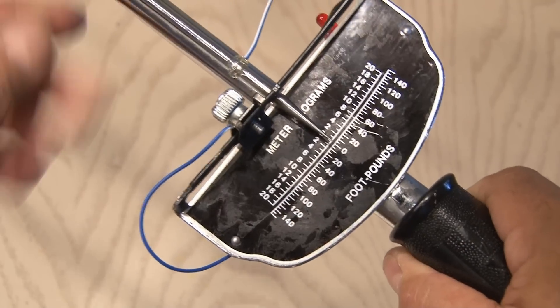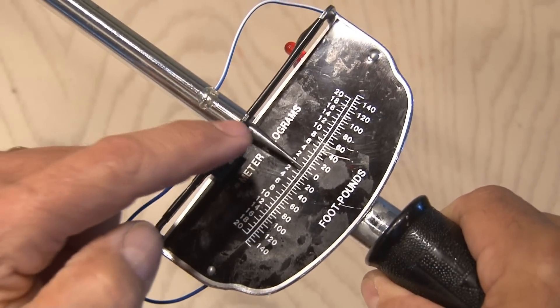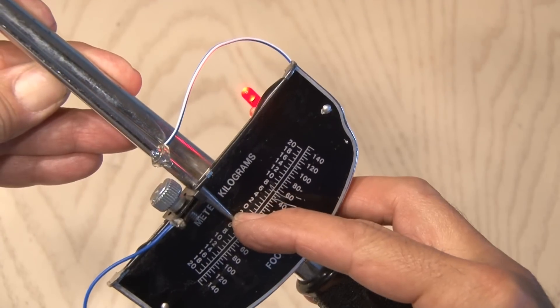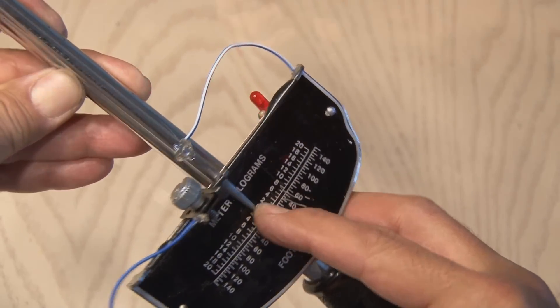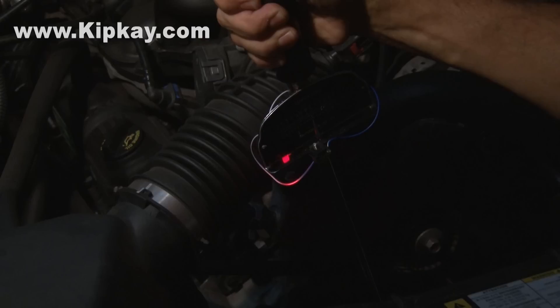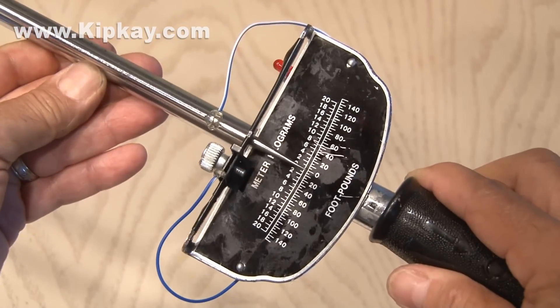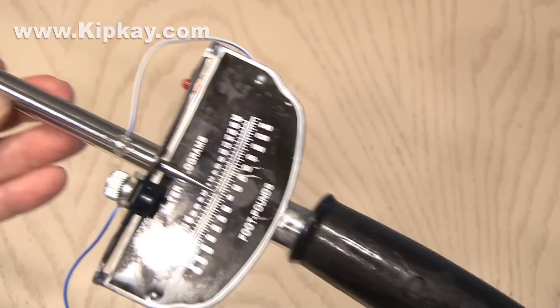Now keep in mind the U-nut can be moved to indicate whatever torque you're trying to achieve. And in testing it out, when the indicator bar reaches the torque limit, the LED lights up. Now when you're working in those hard to see locations, you'll be able to see the torque you've reached. And that's how to hack a torque wrench to make it better.